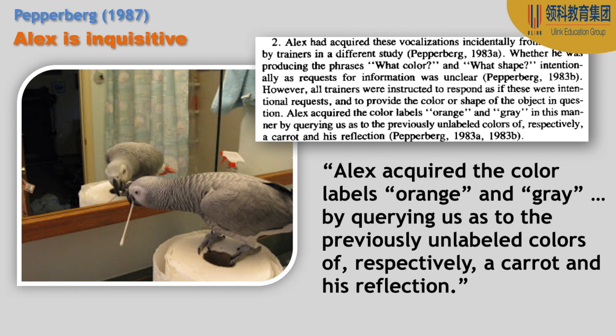One thing that really impresses me about Alex — and this is in the primary source — is learning some of the ways he learned certain colors. For example, he learned the color gray by looking in a mirror and asking 'What color Alex?' and Pepperberg then taught him the word gray. That's kind of amazing, because it makes you realize that Alex is not just inquisitive but also possibly self-aware, maybe even with existential concerns.